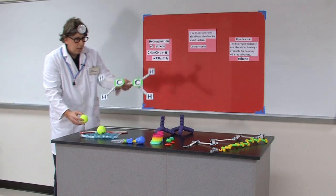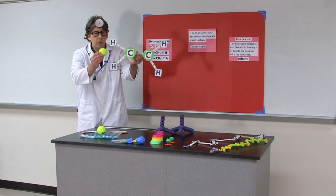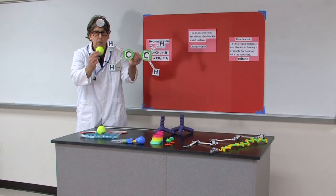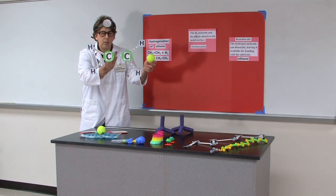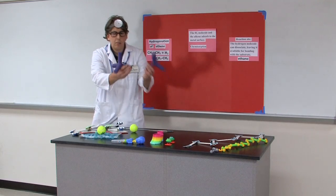The hydrogen atoms can then react with the alkene molecule to form an alkane, meaning one hydrogen can react with one side of the molecule, another hydrogen with the other side of the molecule, to form the ethane molecule.